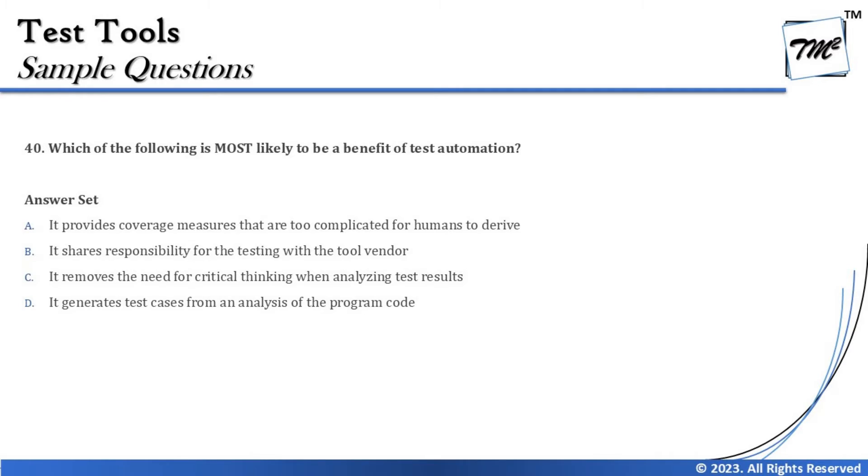Option B says it shares responsibility for testing with the tool vendor. A tool vendor is someone not concerned about your project, your responsibilities, or your deadlines. All they do is supply the tool, and they are only worried about licensing, supply, updates, and support — but they do not share any of your workload. Never pick such an option as the right answer, because the tool vendor is totally outside your project and context.